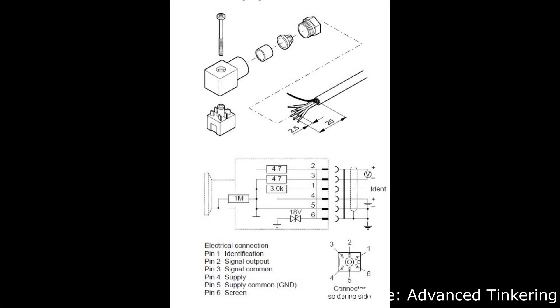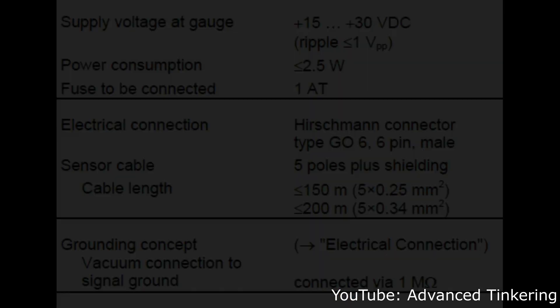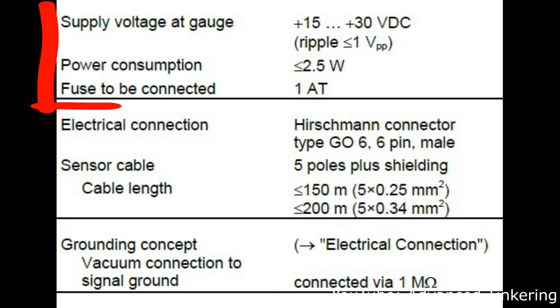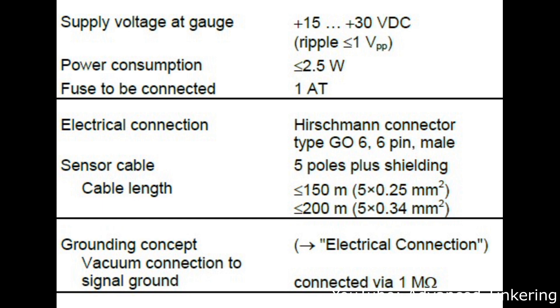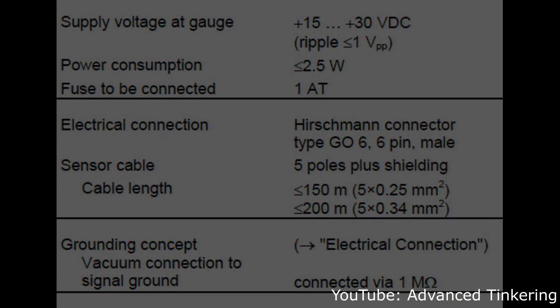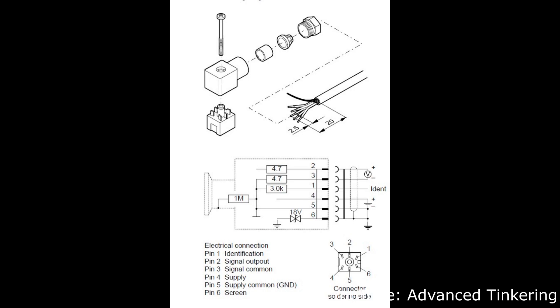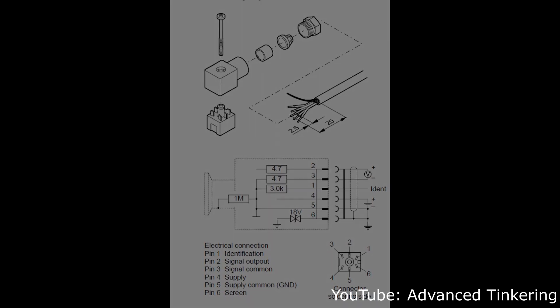The pinout of the sensor is pretty simple. You basically have 5 pins you have to worry about: the signal output, the signal common, the supply, and the supply common. You can use different power supplies to supply the sensor. The sensor accepts 15 to 30 volts DC, but the voltage should of course be constant. So you simply connect your power supply to pin 4 and 5. After that you can use pin 2 and 3 and connect them to your ADC to read out the voltage of the sensor.